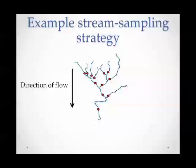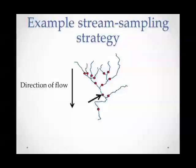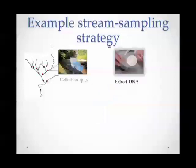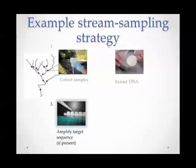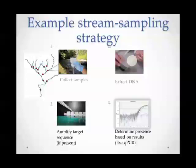A general approach to applying this eDNA method to a landscape depends on the goals of the study. Taking a typical dendritic stream network, sample sites can be placed just above confluences. A positive detection at a given site would suggest that DNA came from somewhere upstream in that segment. We can continue to break the stream network into smaller units for inference. At each site, we'd collect our samples, extract the DNA, amplify our target sequence if present, and determine presence based on those results, using qPCR analysis.